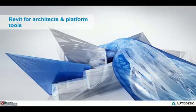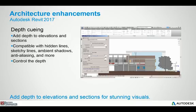Let's take a look at the Revit for architecture and platform tools. The first feature that has been enhanced and introduced is depth queuing. This gives us the ability to adjust the elevations to display what information is bolder and what information is lighter in the foreground versus the far end.